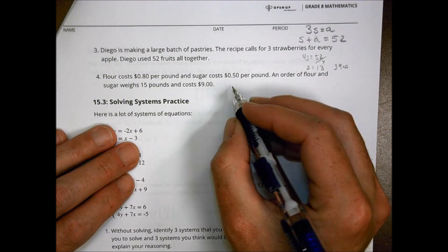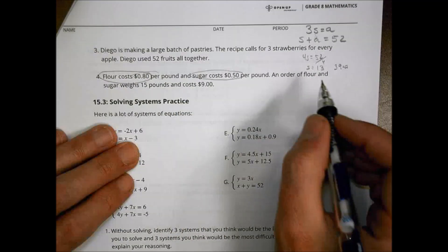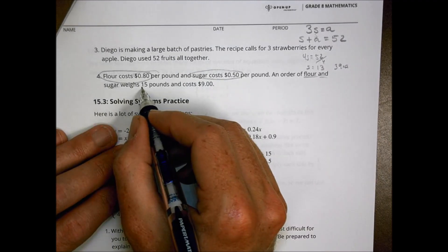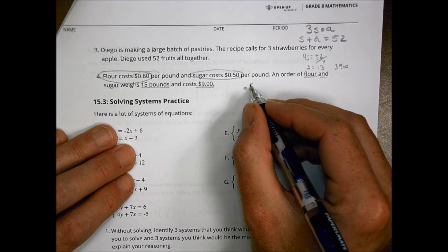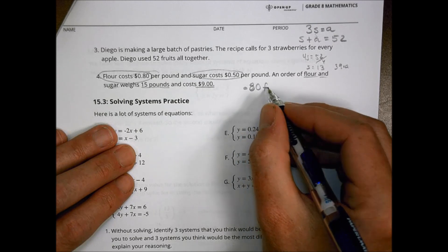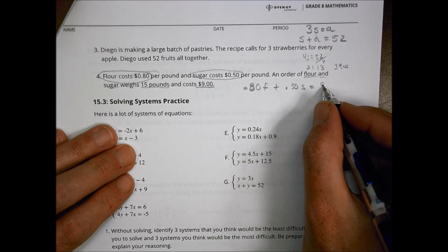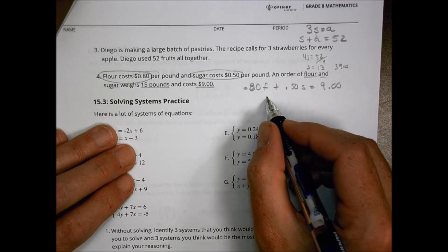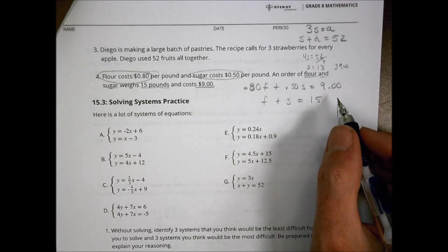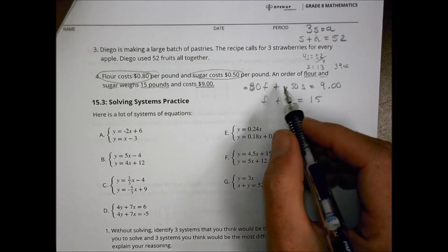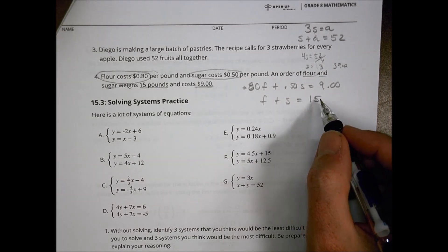The last one, number four, says flour costs 80 cents a pound and sugar is 50 cents per pound. An order of flour and sugar weighs 15 pounds and costs $9. So what do we know here? That I have 80 cents for flour plus 50 cents for sugar is going to give me a total cost of $9. I also know that the flour plus the sugar altogether should equal 15 pounds.